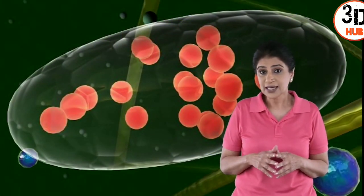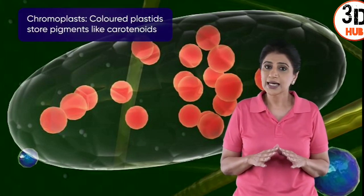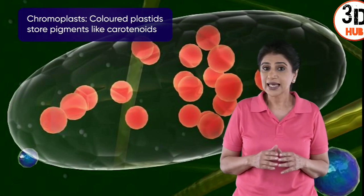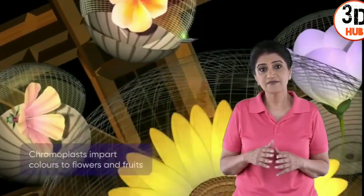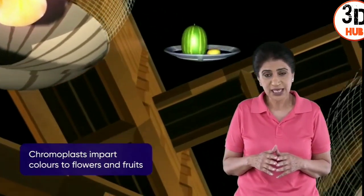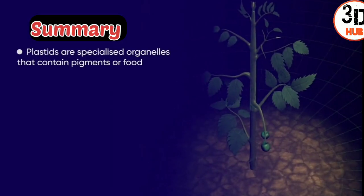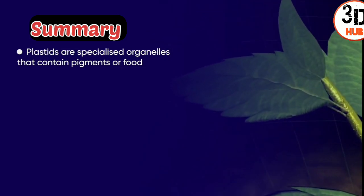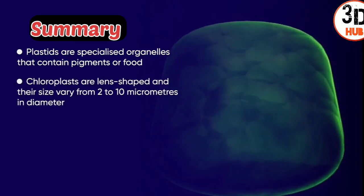Leukoplasts are of three types: amyloplasts that store starch, elaioplasts that store lipids, and proteinoplasts that store protein. The third category of plastids present in plants is chromoplasts — colored plastids that contain pigments like carotenoids, found in flowers and fruits and responsible for imparting color to them.